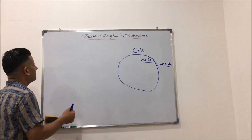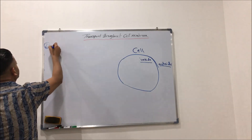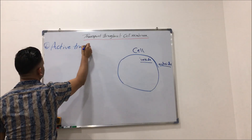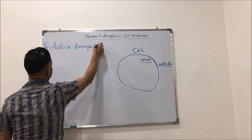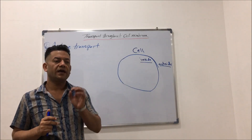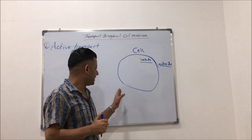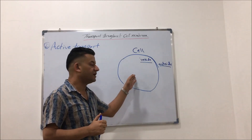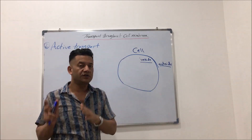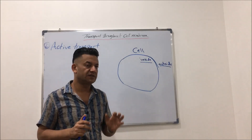Now let's speak about the other type of transport, which is the active transport. Active transport means the transport of substances from outside of the cell to inside of the cell, or from inside of the cell to outside of the cell, against the concentration gradient of that substance.